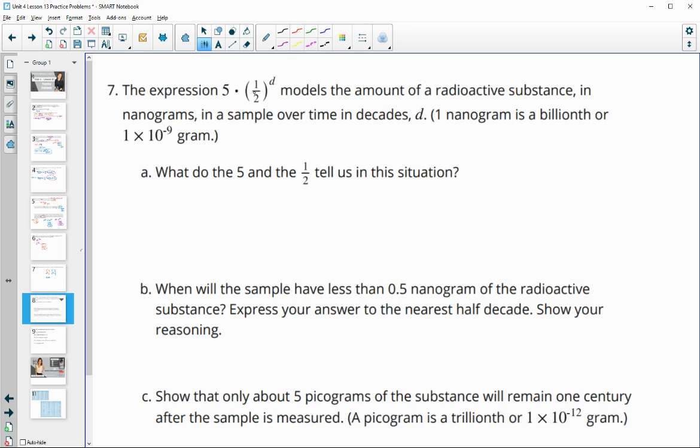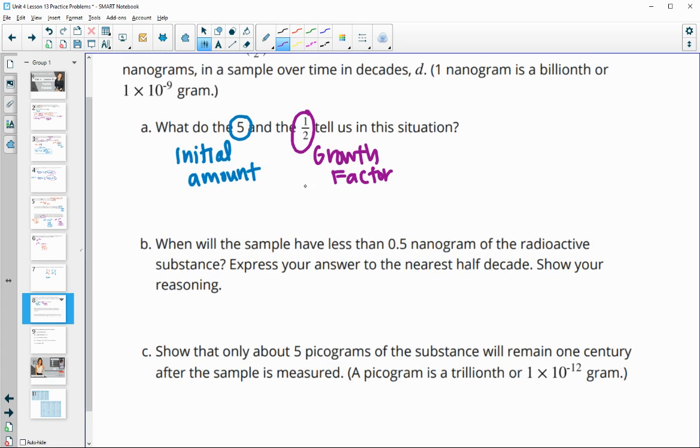Number seven, the expression 5 times one half to the d models the amount of radioactive substance in nanograms in a sample over the time in d decades. One nanogram is one billionth or 1 times 10 to the negative 9 grams. So what do the 5 and the one half tell us? Well, the 5 is the initial amount. So the initial amount of that radioactive substance present. And then the one half is the growth factor, meaning in this case that it's decreasing at a rate of 50%. Part b says, when will the sample have less than 0.5 nanograms of radioactive substance? Express your answer to the nearest half decade. So you can kind of plug into that equation. You can also think about this cutting in half.